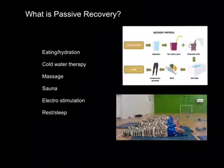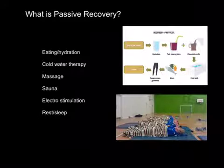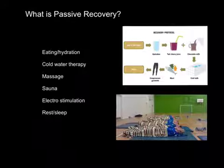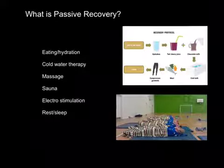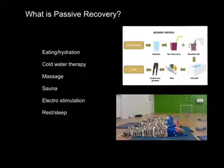What is passive recovery? Just like active, when we look at passive, it tells us we're replenishing the body but not using activity or exercise to do that. We're doing things like eating and hydration to replenish our glycogen stores and fluids. Cold water therapy helps with any inflammation that might have occurred during exercise. Massage increases blood flow so muscles get more nutrients and get rid of waste products. Sauna and sweating also help get rid of waste products. Electrostimulation works the muscle fibers passively. And rest and sleep allow the body to repair and replenish.